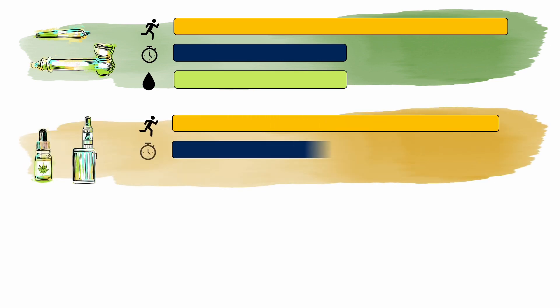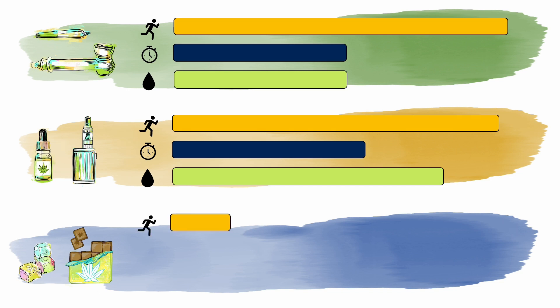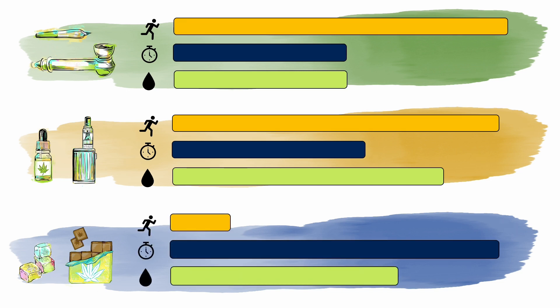Vaporization also hits quickly, with higher spikes of THC. Edibles, on the other hand, are slow to take effect, last much longer, and reach full effect over time rather than all at once.